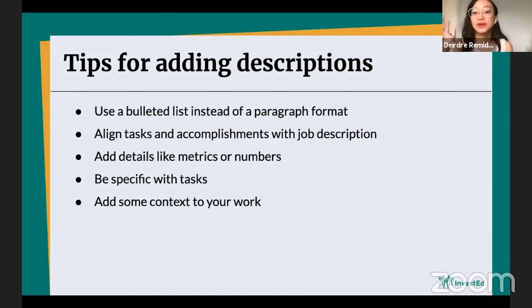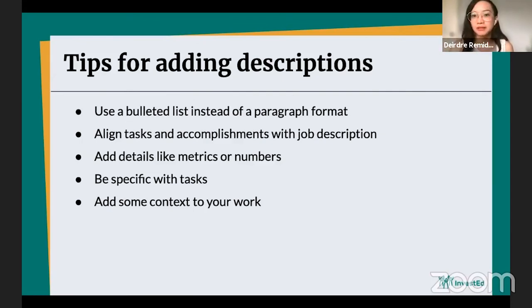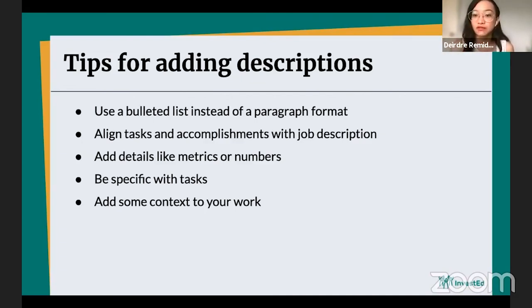Be specific with tasks — break them down instead of just saying 'organized.' What did you do to organize the event? Who did you coordinate with? What did you prepare? You can also add context to your work: instead of just saying you made a business plan, what kind was it? What impact were you trying to achieve? Or for a proposal made for a class, what was it for? Add context to the work you've done.